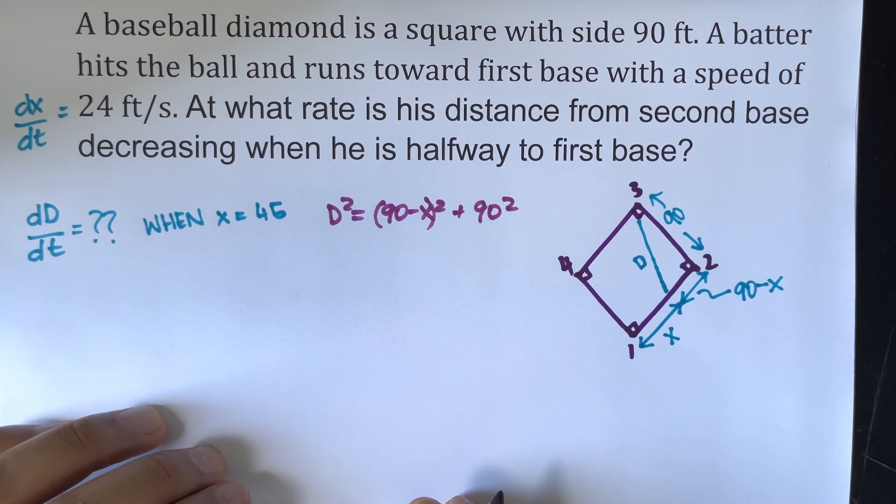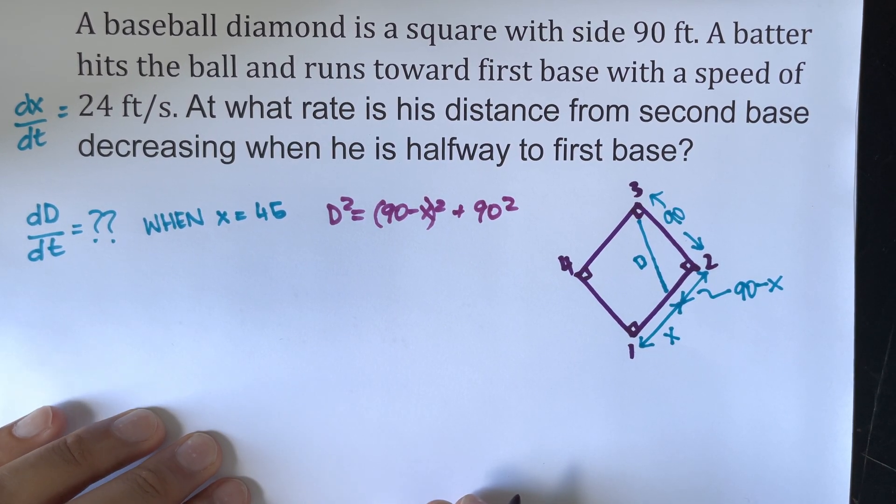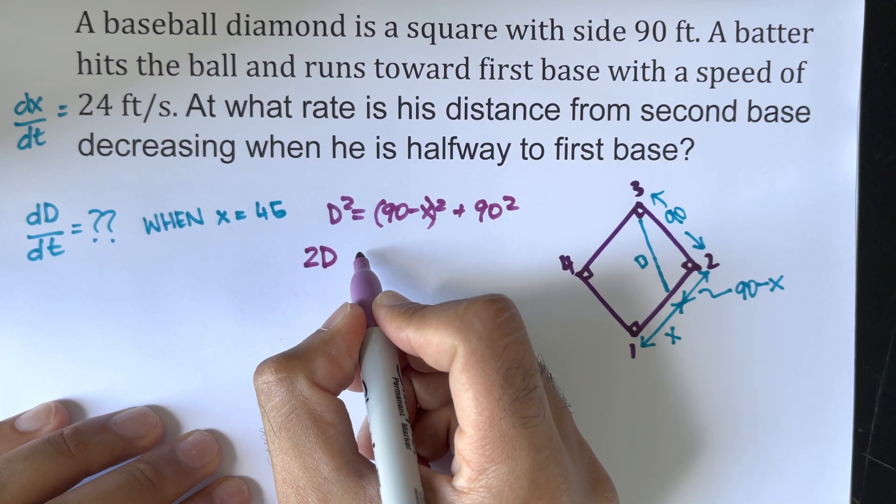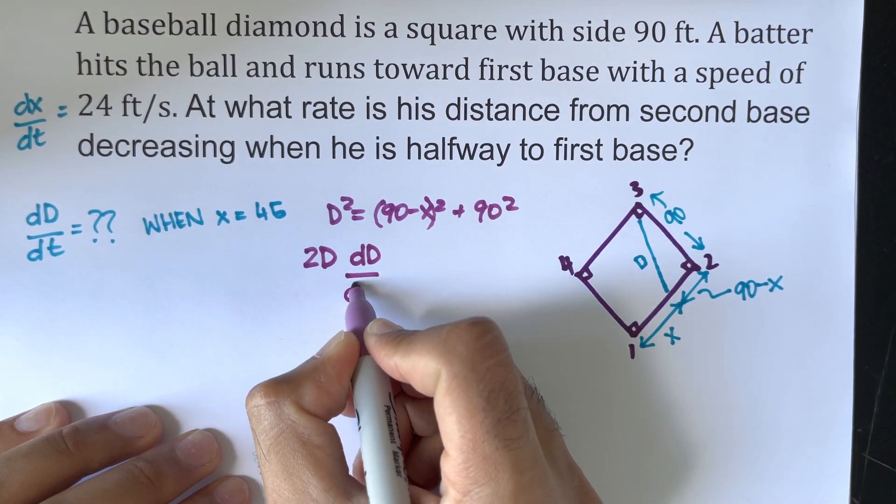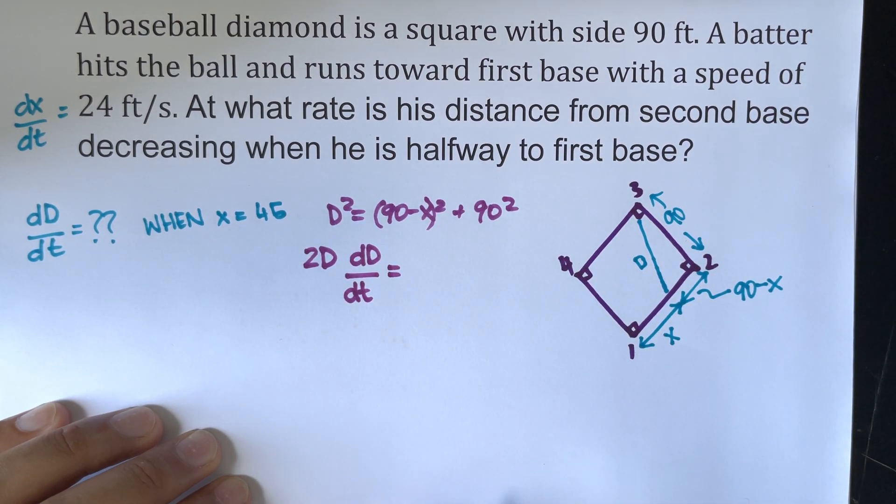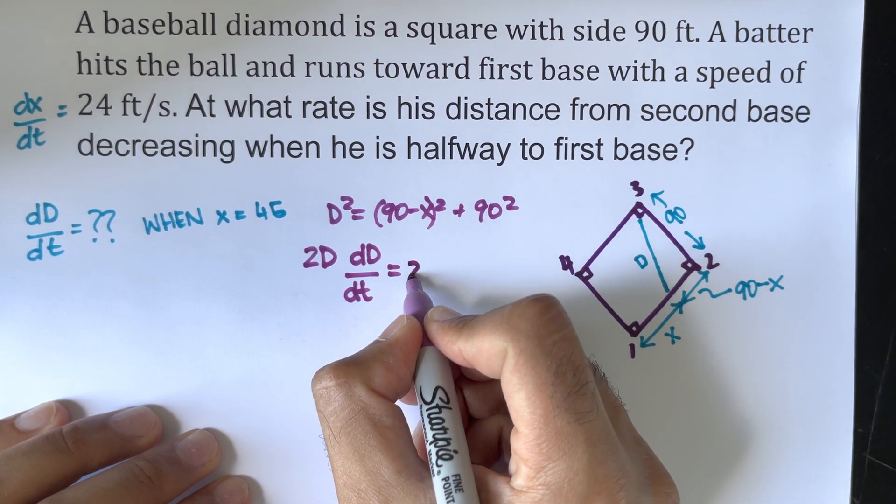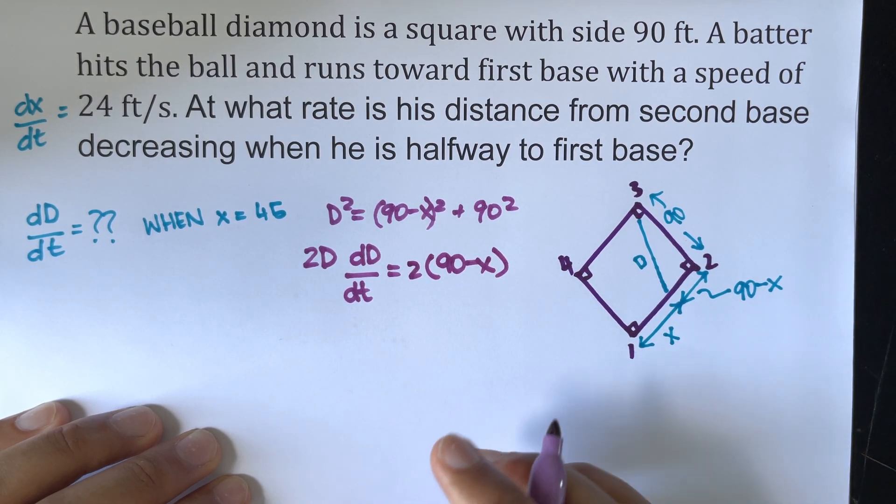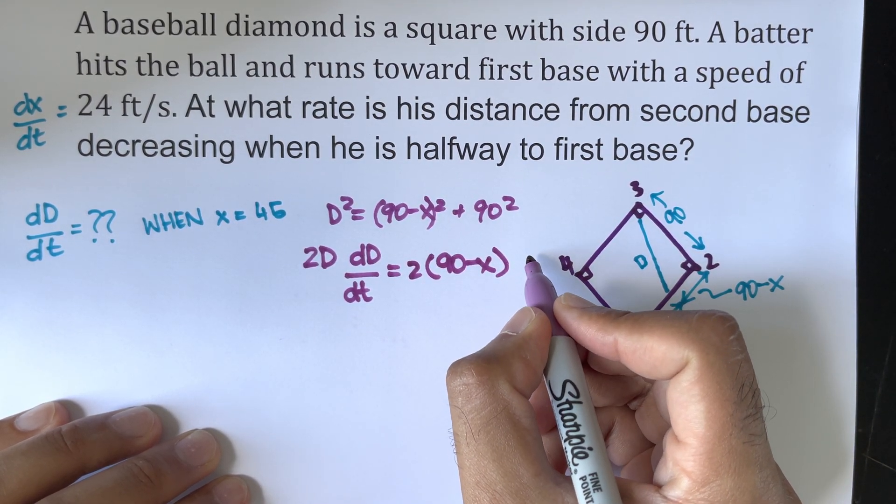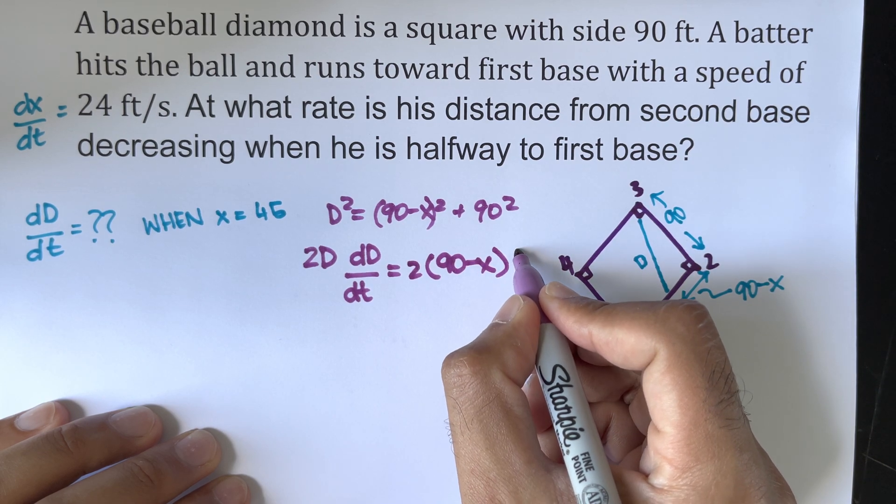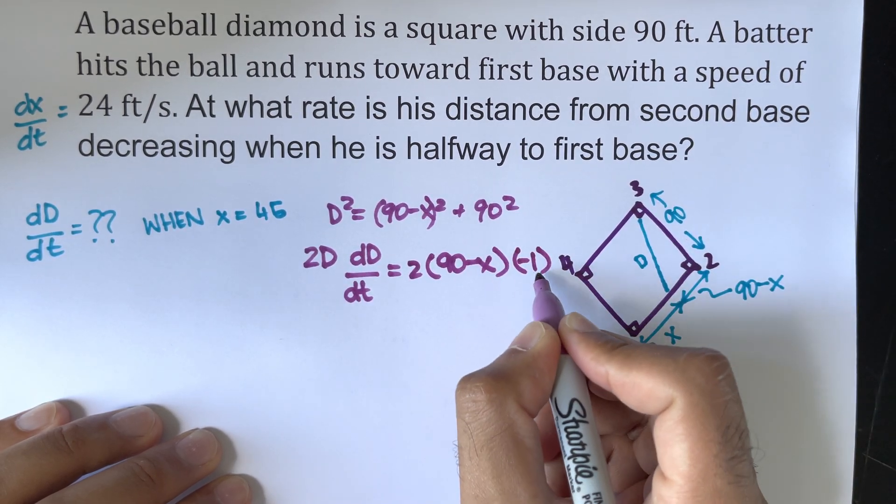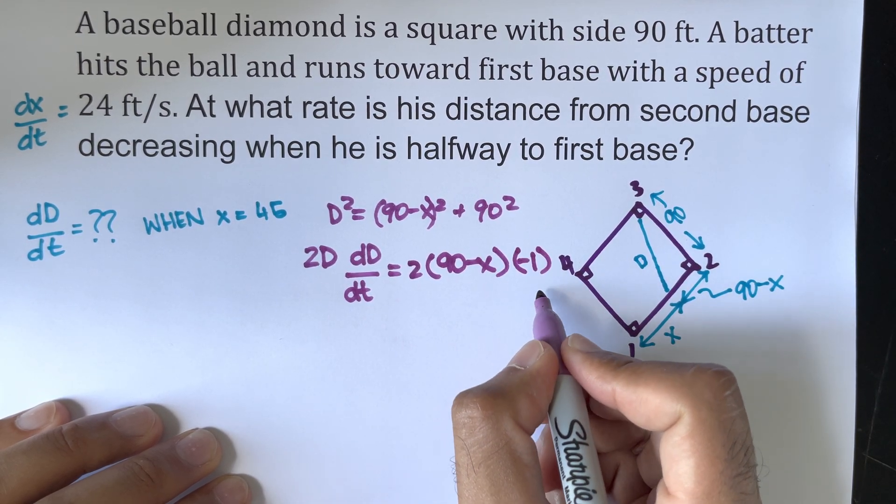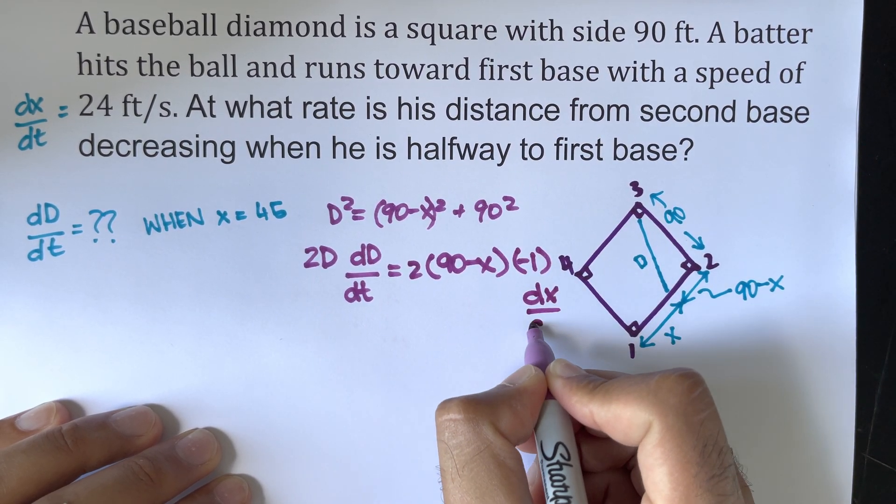And if we differentiate with respect to t, we will get 2d·dd/dt being equal to 2(90 minus x), and we'll get a negative value as 1, thus simple chain rule principles, and that will be dx/dt.